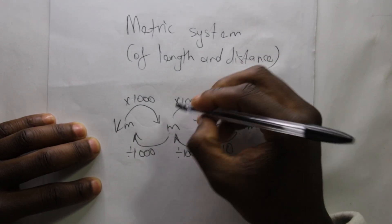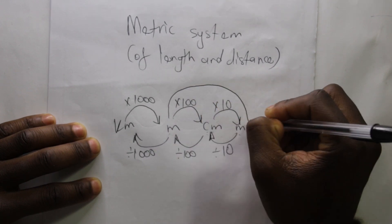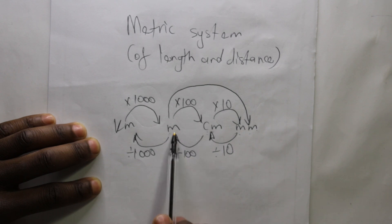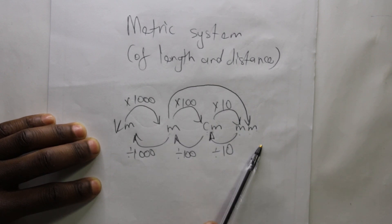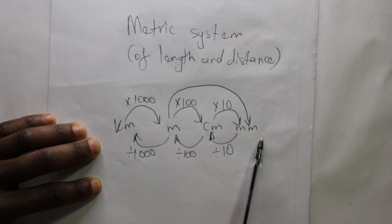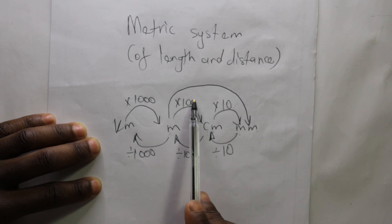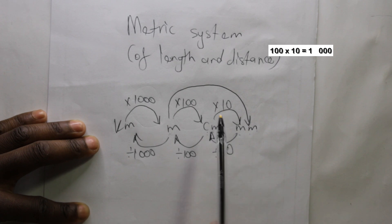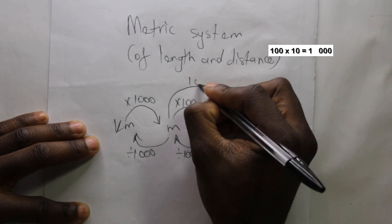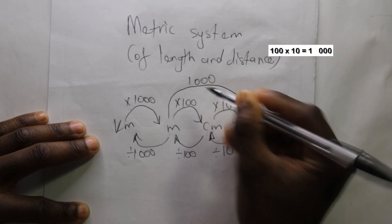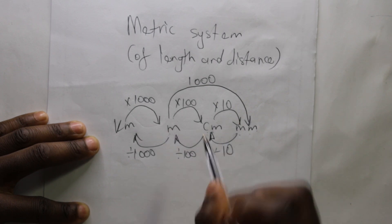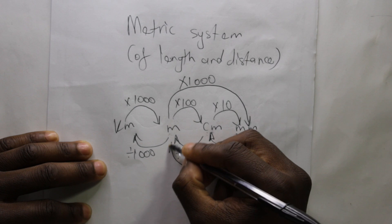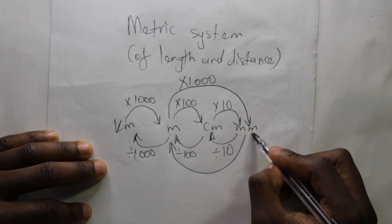We can go broader — for example, from meters straight to millimeters, rather than going meters to centimeters then centimeters to millimeters. On your calculator, multiply one hundred by ten, making one thousand. From a larger unit to a smaller unit we multiply; vice versa, from a smaller unit to a bigger unit we divide.